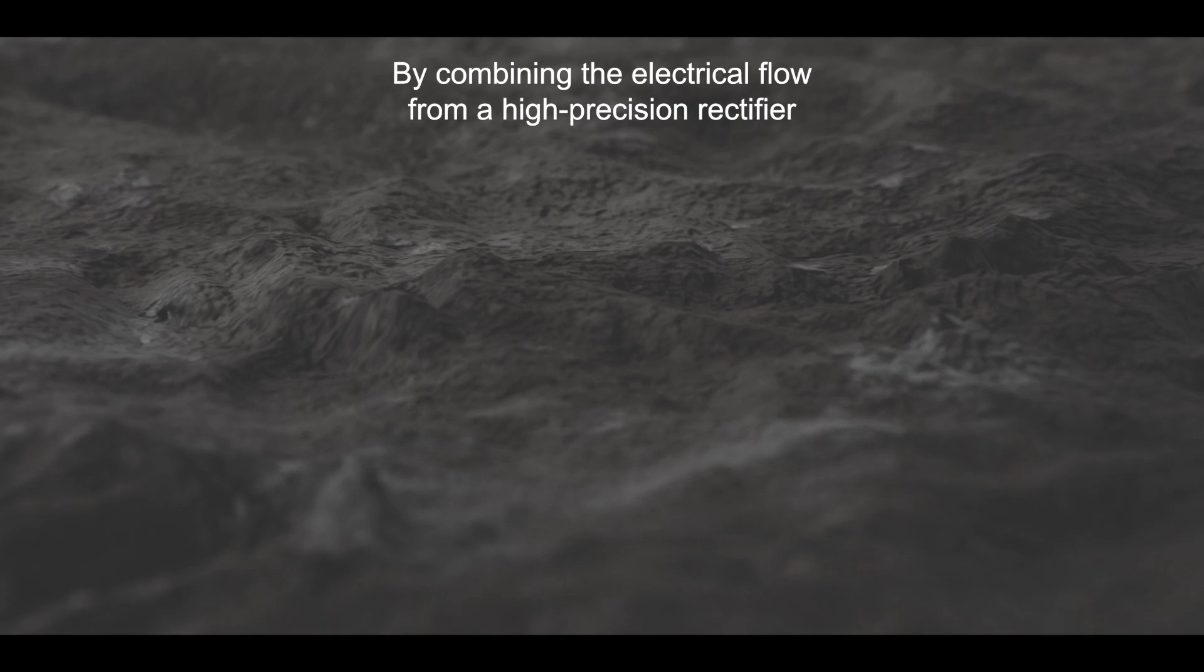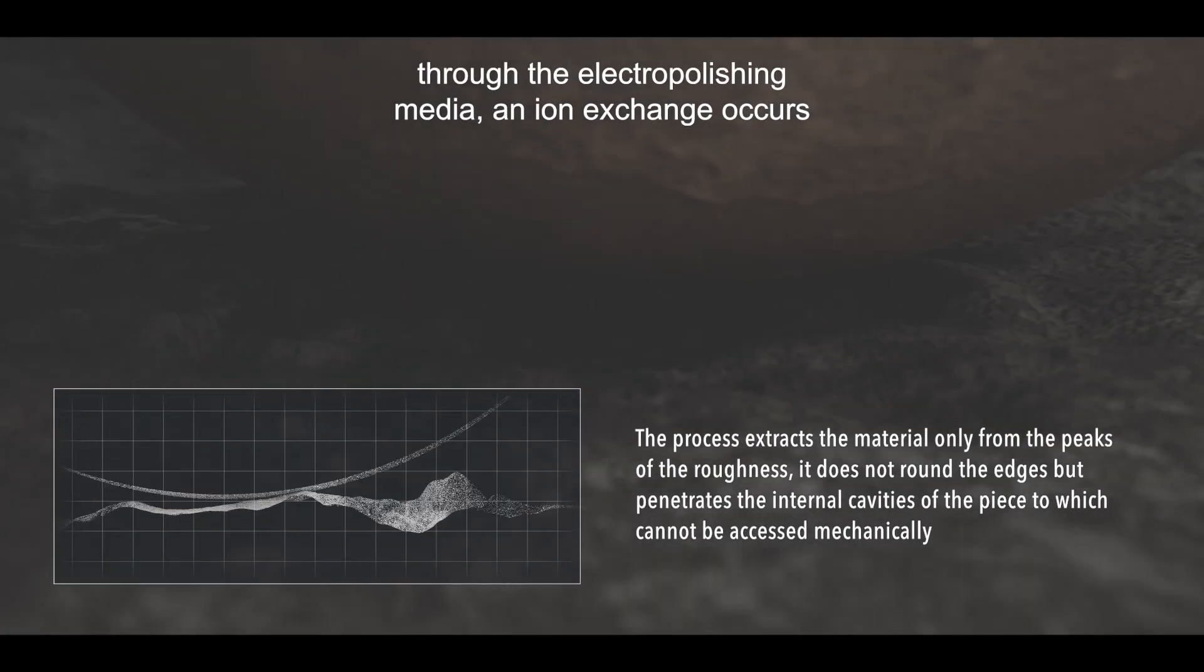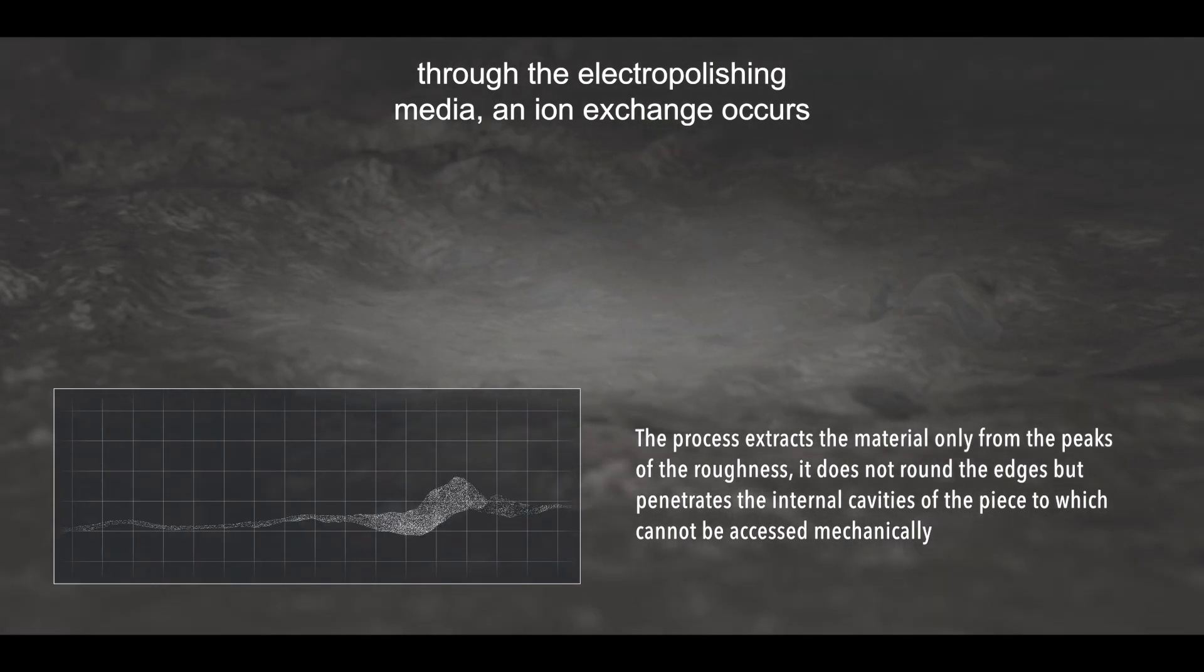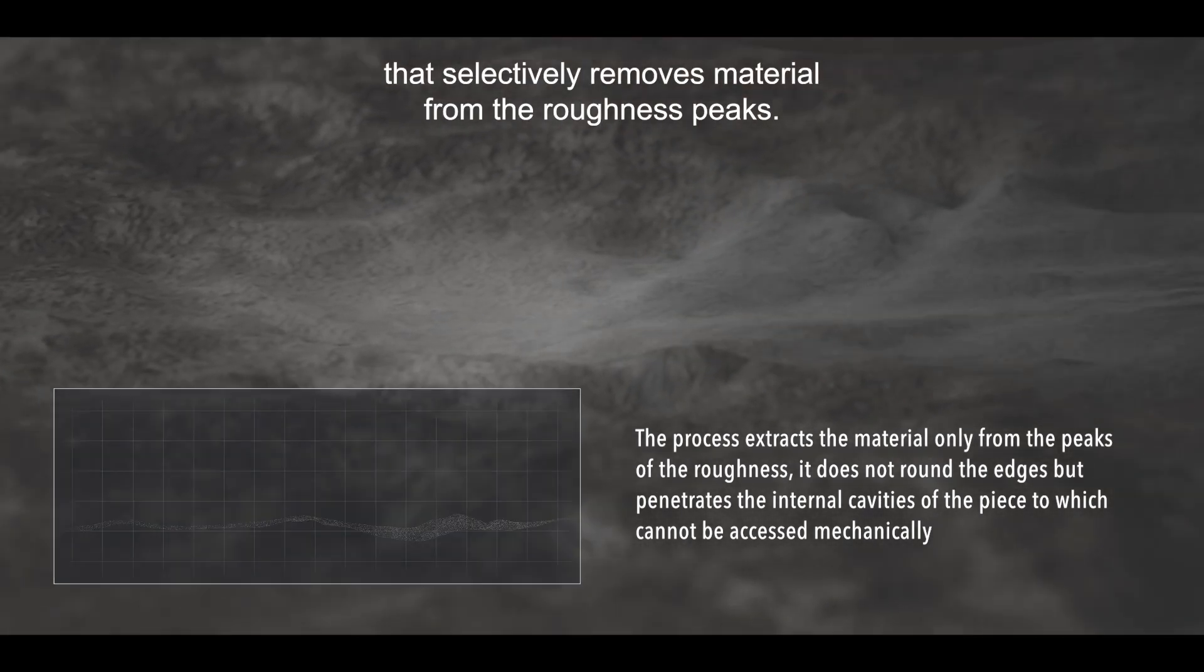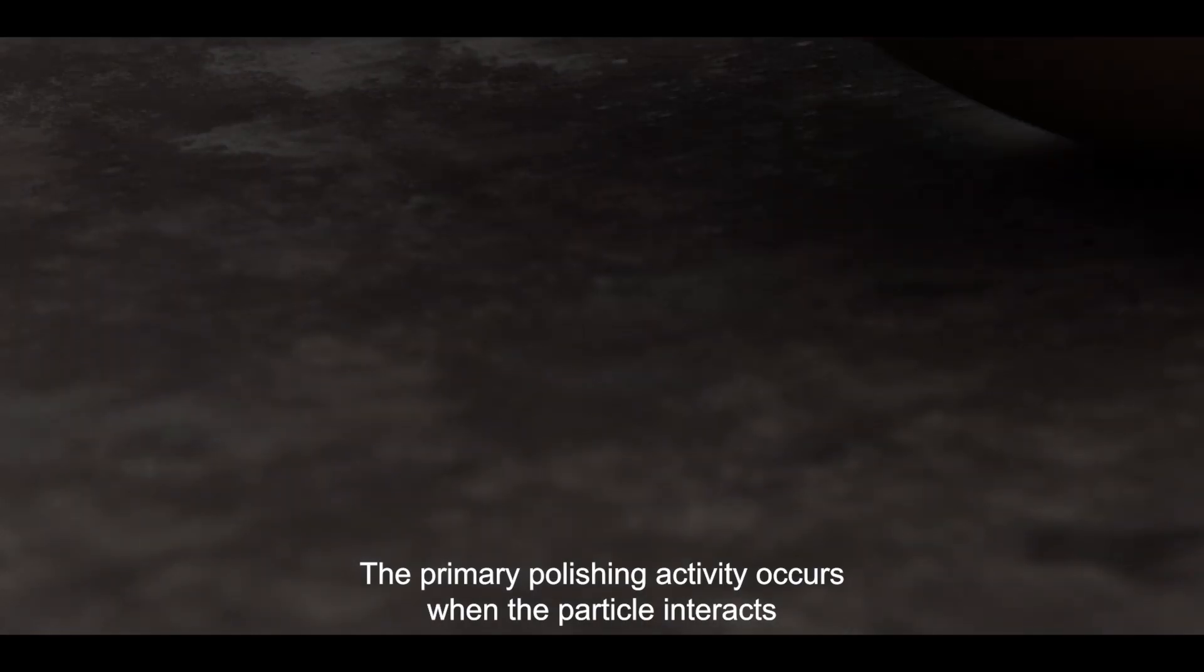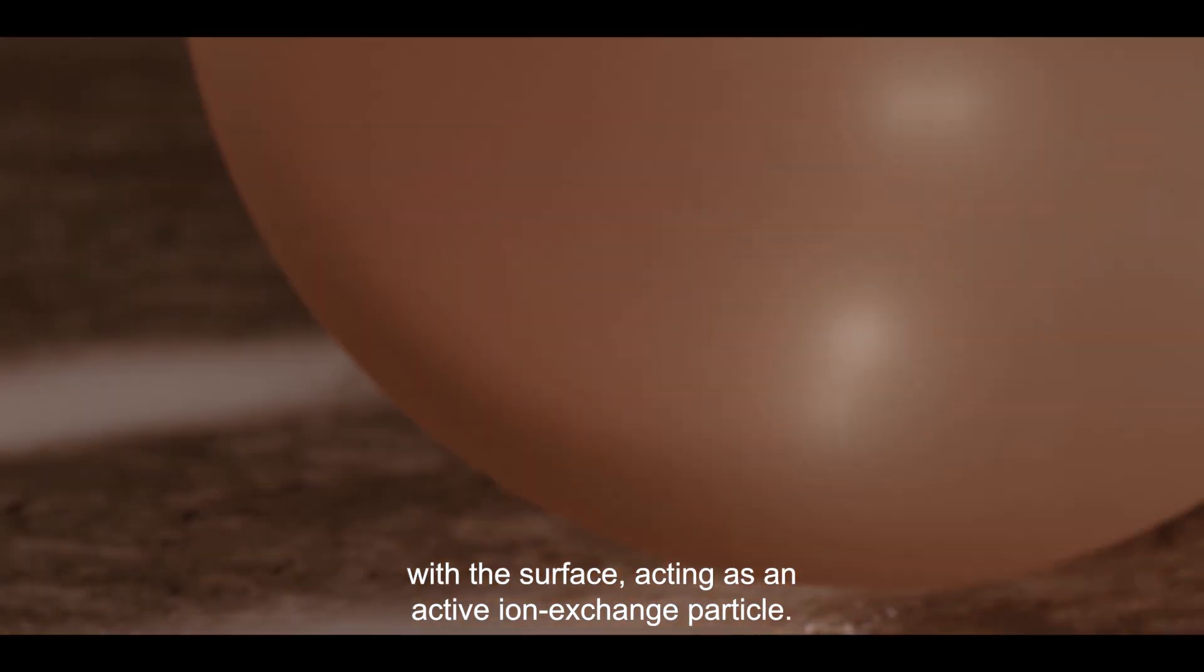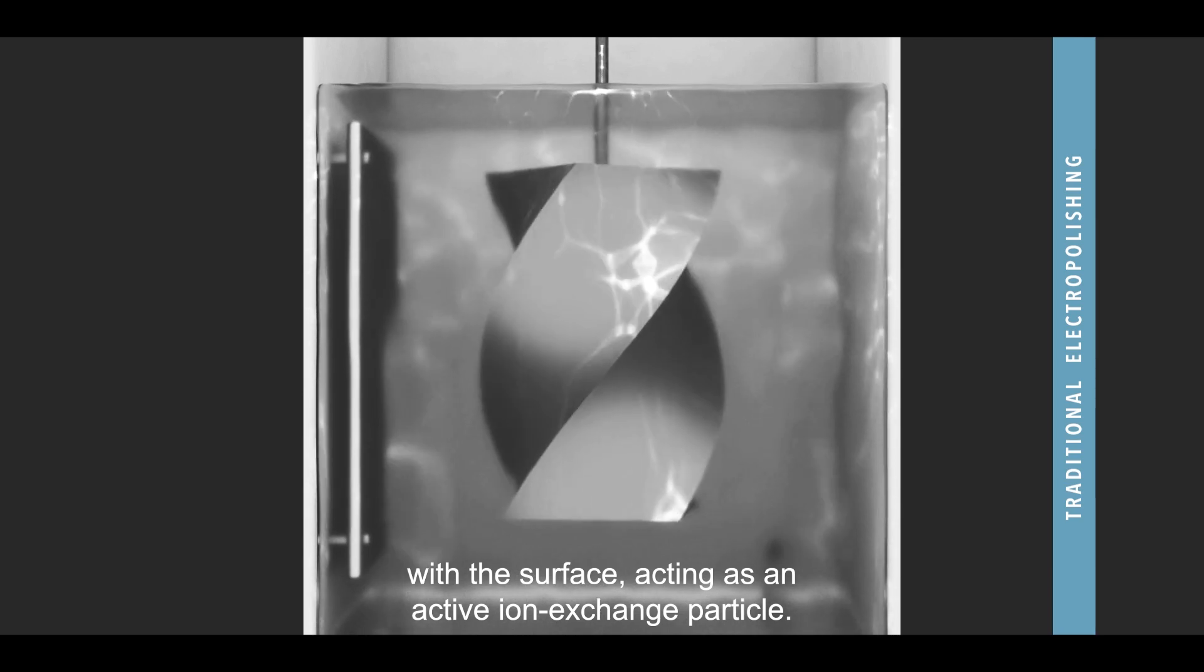By combining the electrical flow from a high precision rectifier with the movement of the parts through the electro polishing media, an ion exchange occurs that selectively removes material from the roughness peaks. The primary polishing activity occurs when the particle interacts with the surface, acting as an active ion exchange particle.